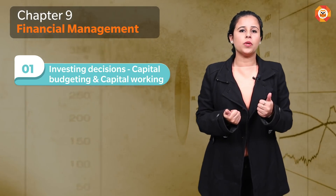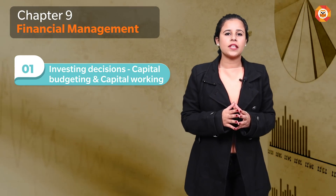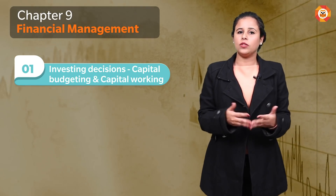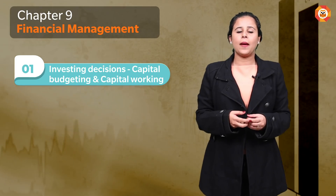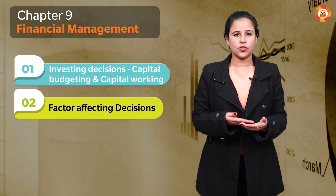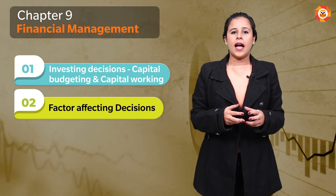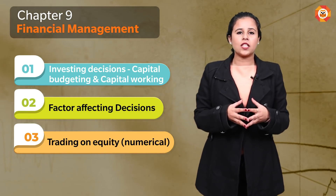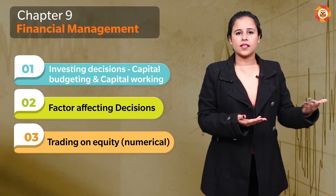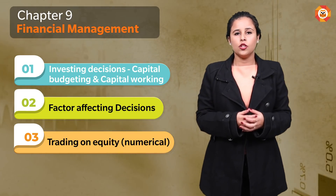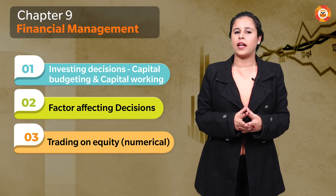Now let's start with Part Two book, which has four chapters. Part A is 50 marks and Part B is 30 marks. The first chapter of Part B is Financial Management, covering three important decisions — all three are equally important. Even for investing decisions, capital budgeting and working capital are equally important. Factors affecting all three decisions should be well known — either a direct question or a case study identifying which factors impacted a decision. Second important topic is trading on equity — you can expect a numerical or one-mark question, e.g., what happens when ROI is greater than interest on debentures.